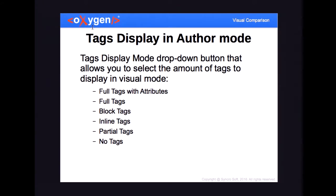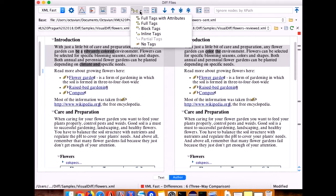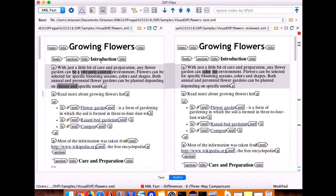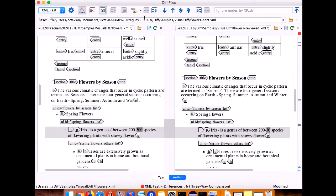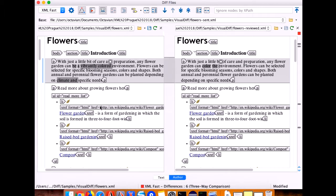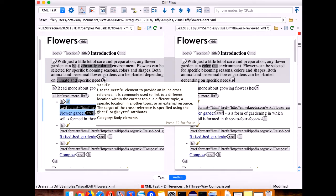If you like to see the tags and see what elements are in the author mode and also the attributes, you can enable the mode to see the author with full tags or full tags with attributes. You can do this from the toolbar — I'll select full tags and you can see the document like this. And if you want to see the attributes as well, it will look like that. Maybe you want to edit some attributes faster, so you can use it in this mode.